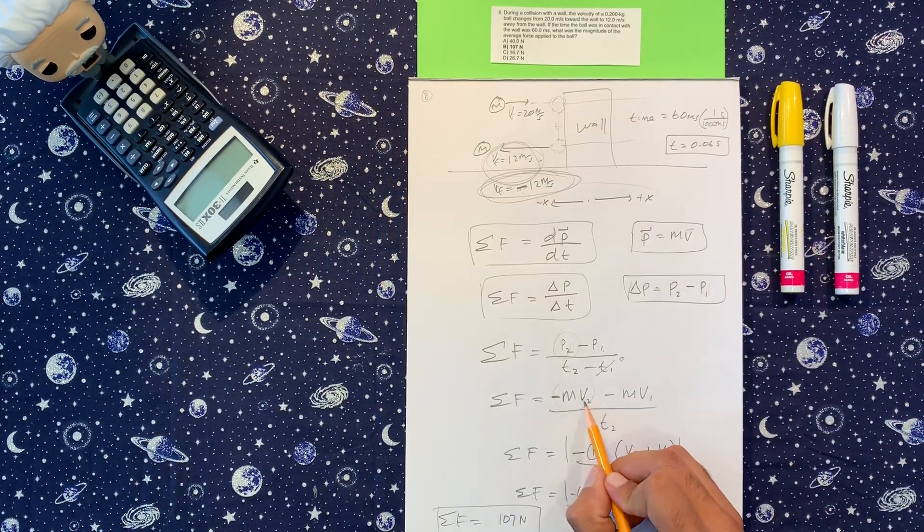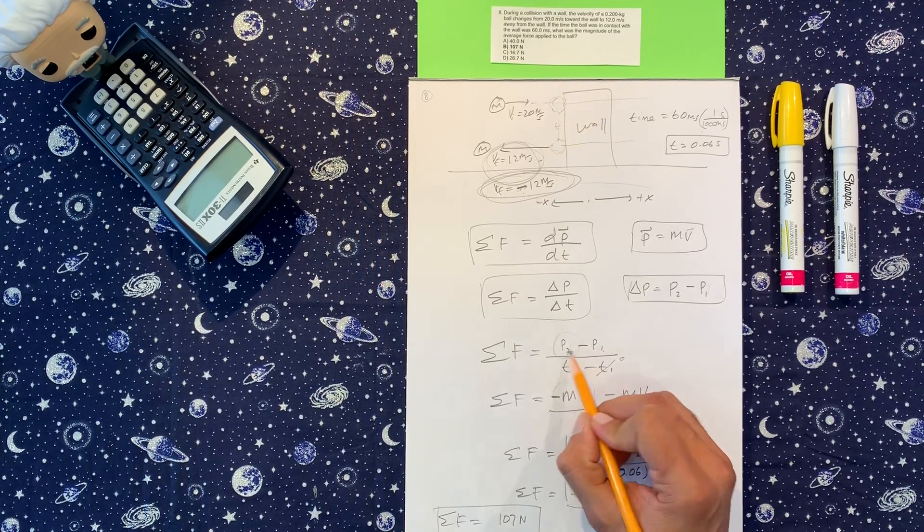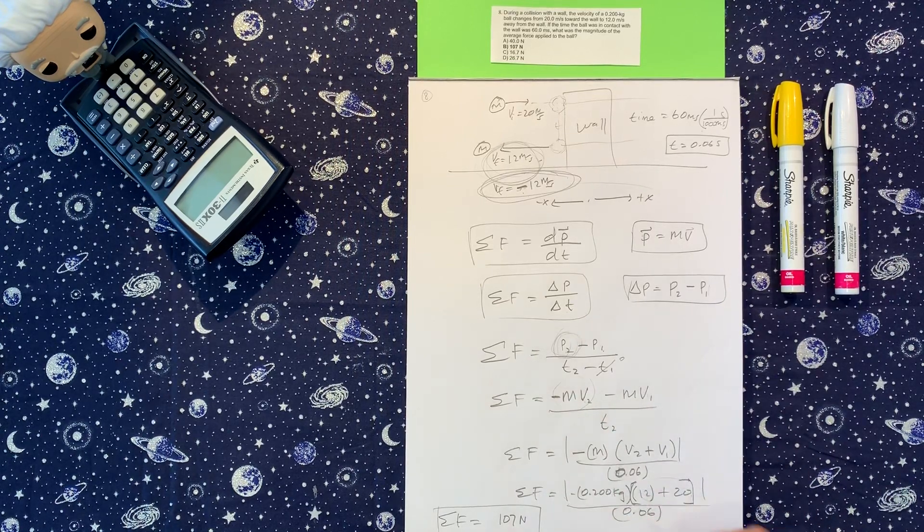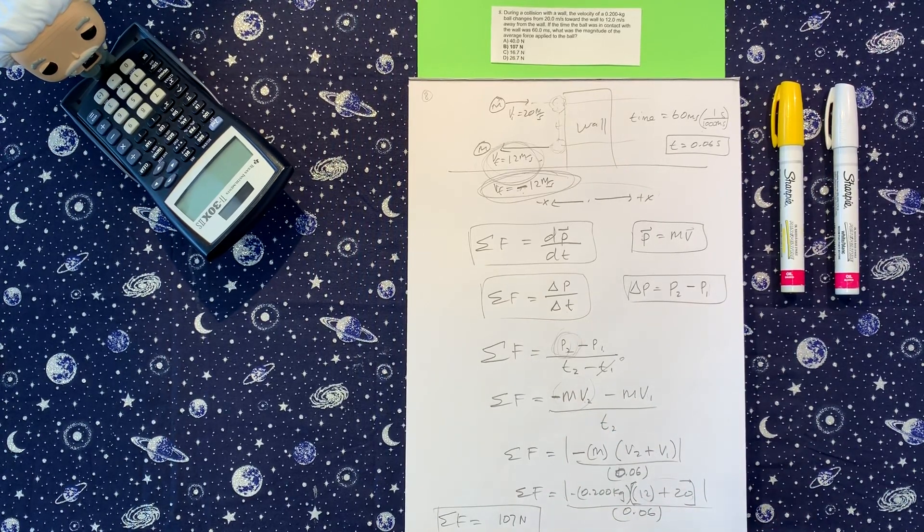And down here, final minus initial, just remember the final was negative, so include that and then you're good to go.